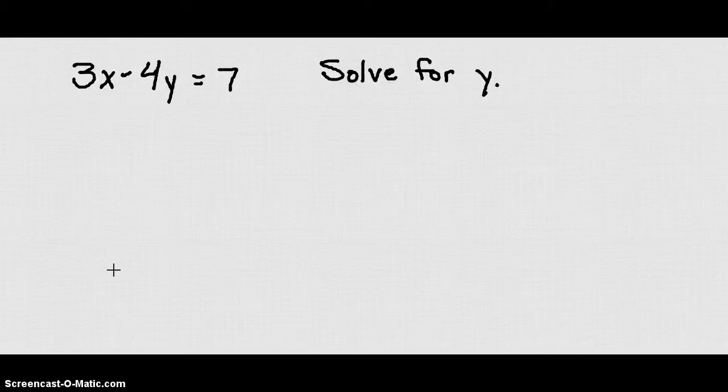You're going to use this technique throughout Algebra and also a lot in other applications like science, physics, and chemistry. You're going to find solving for an equation for a specific variable useful all over the place. In this case, we want to solve this equation 3x minus 4y equals 7 for the variable y.